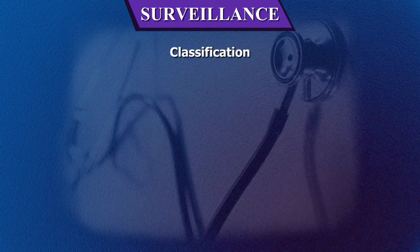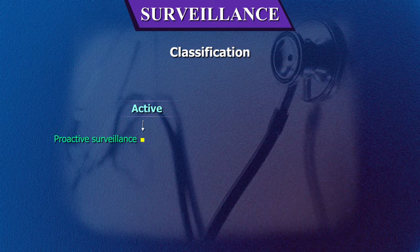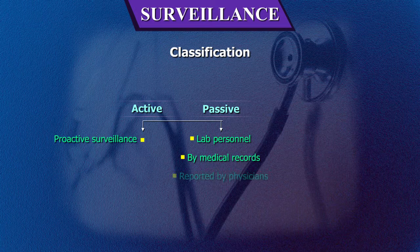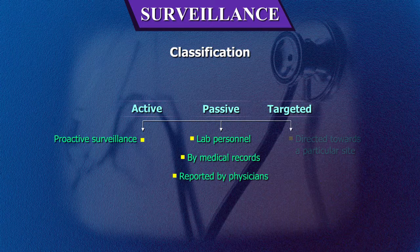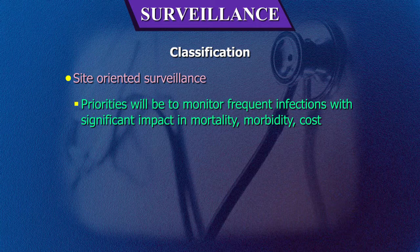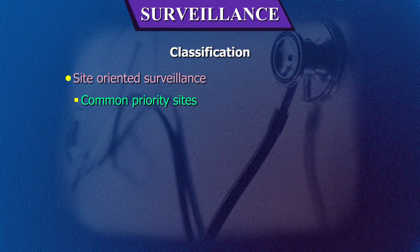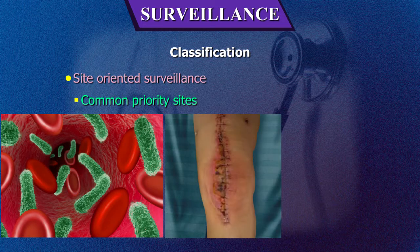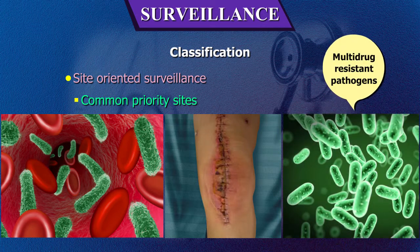Surveillance is usually classified as: Active surveillance — proactive surveillance undertaken by the hospital infection control team; Passive surveillance — reporting by individuals such as lab personnel, medical records, or reported by physicians; Targeted surveillance — directed towards a particular site, place or situation. The first type is site-oriented surveillance, with priorities to monitor frequent infections with significant impact in mortality, morbidity, cost and which may be avoidable. Common priority sites are primary bloodstream infections, surgical site infections, and infection with multidrug-resistant bacteria, such as in an outbreak situation.